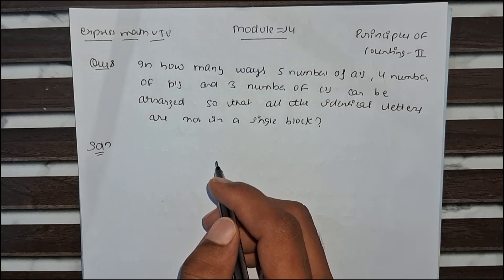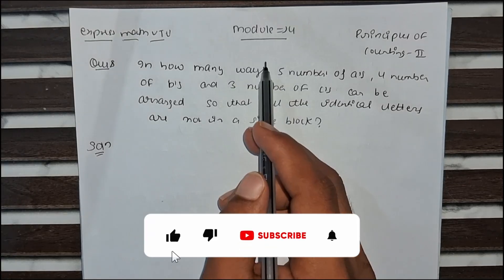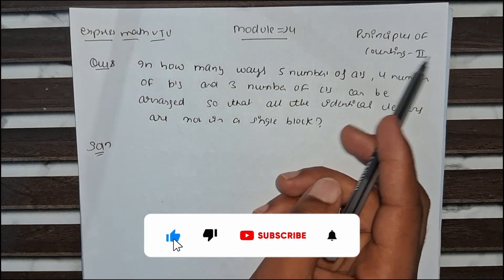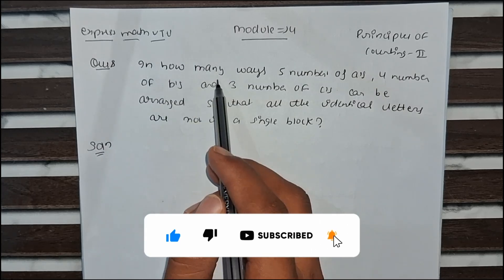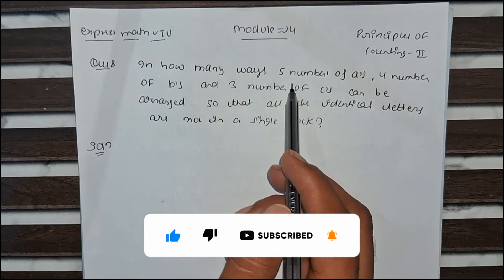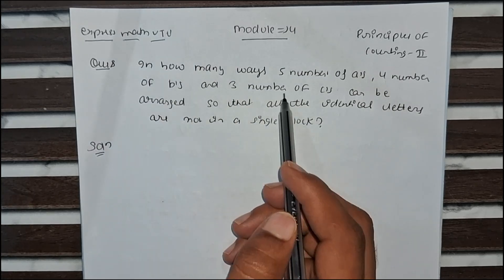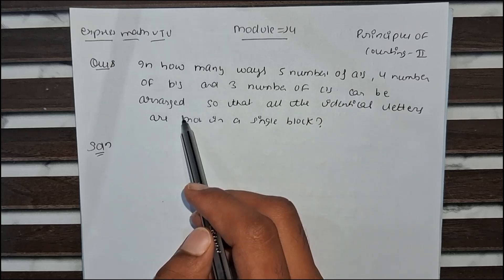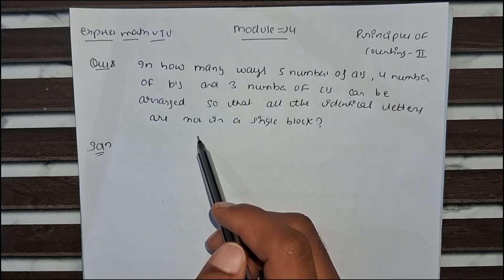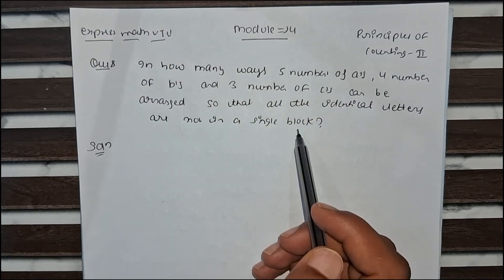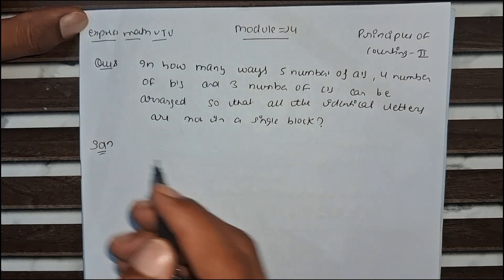Hello everyone, today we are going to solve another important problem from module 4, Principle of Counting. The question is: in how many ways can 5 A's, 4 B's, and 3 C's be arranged so that all the identical letters are not in a single block? So how can we solve this?